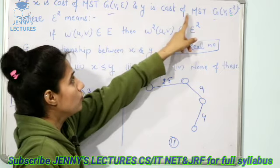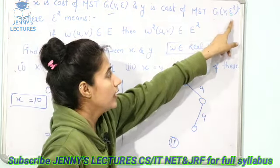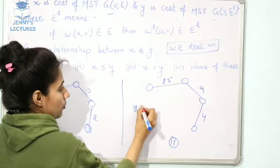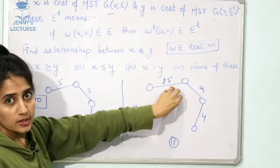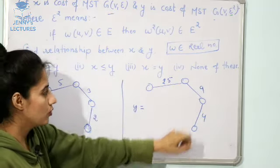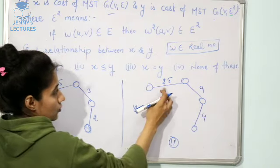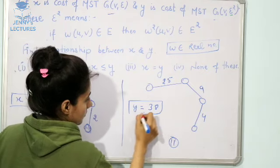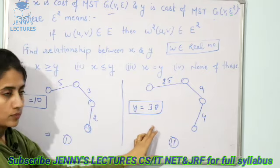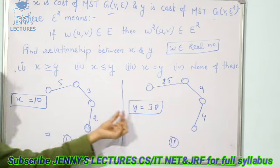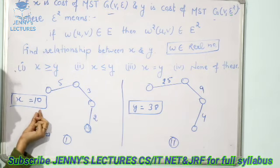And Y is cost of MST G(V,E²). Means the second MST's cost will be Y. Then how to find the cost? Simply sum all the edge weights. So, the cost of all the edges. This would be I guess 38. Now, what is the relationship? Y is greater than X.